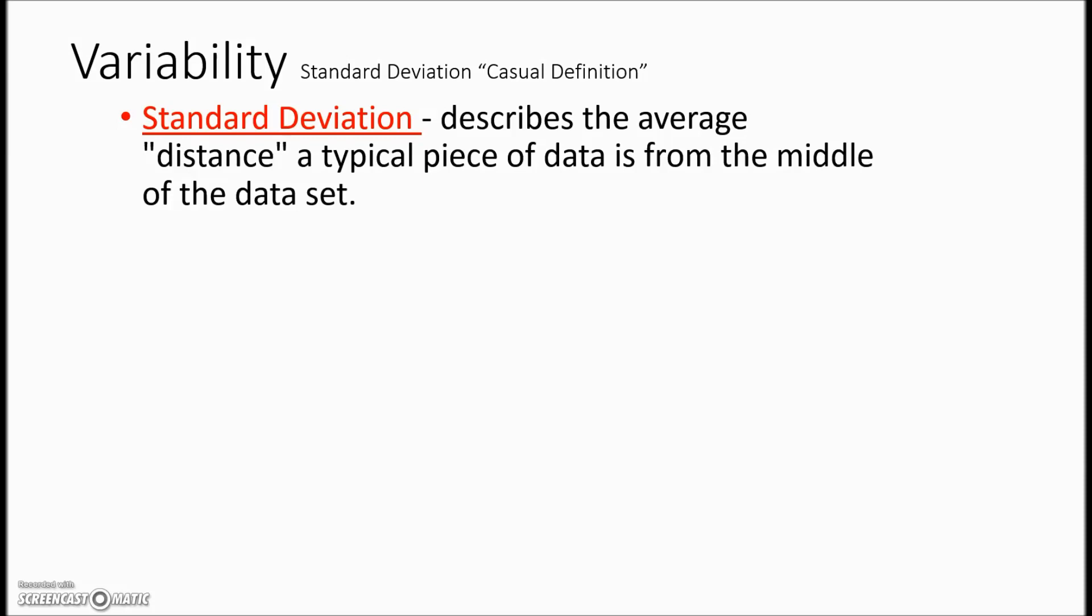Here's the casual definition for standard deviation. It describes the average distance a typical piece of data is from the middle of the data set. It tells us how much that data differs from the mean. And it's a good measure of variability because all of the individual pieces of data are used in calculating it. We saw just a minute ago where using the range to determine the consistency or the measure of variability when an outlier is in there can definitely skew the results.